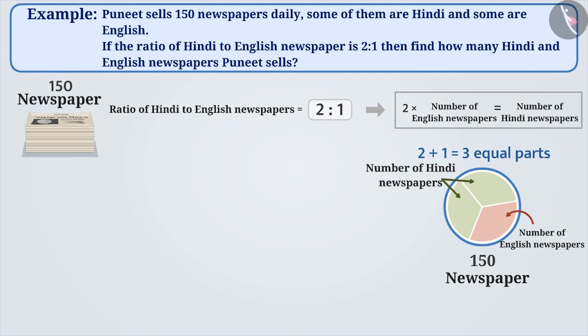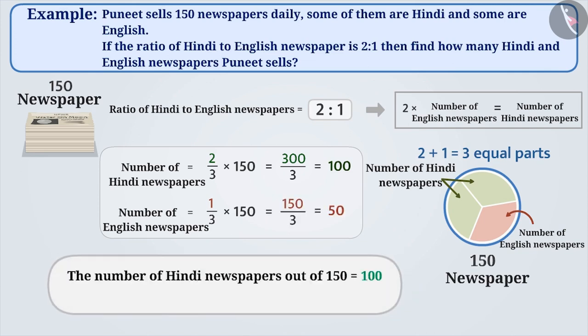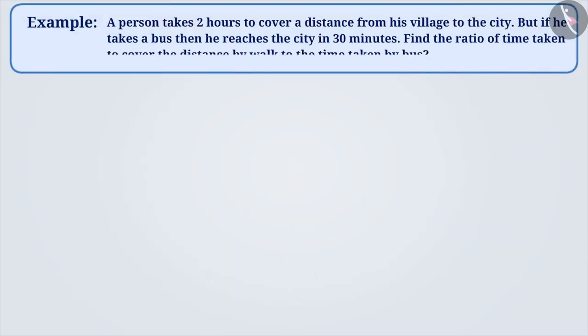Therefore, the number of Hindi newspapers will be 2 by 3 parts of 150 newspapers. Thus, the result will be 100. Similarly, the number of Hindi newspapers out of 150 is 100 and the number of English newspapers is 50. Next example.